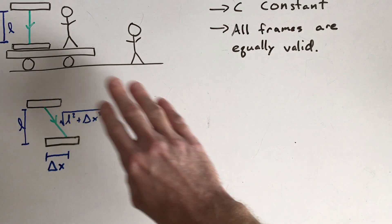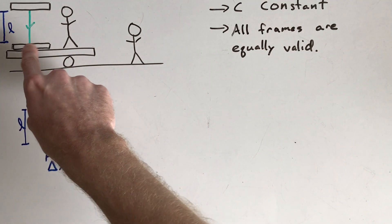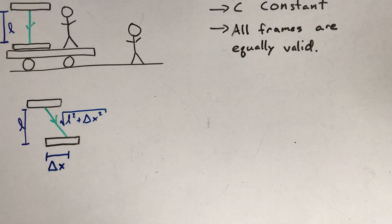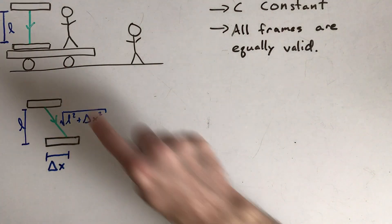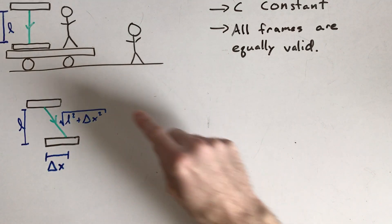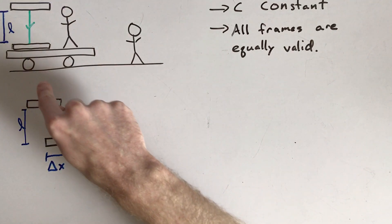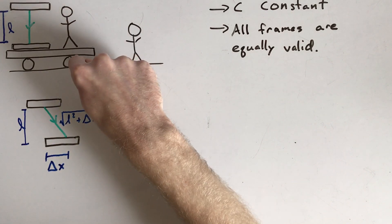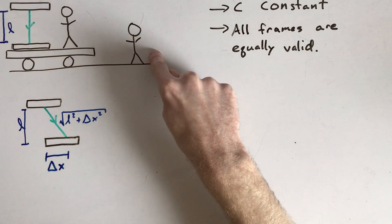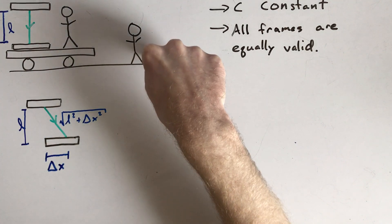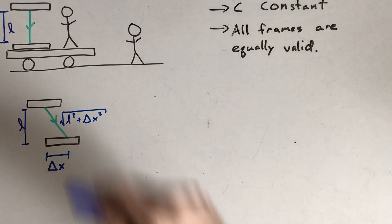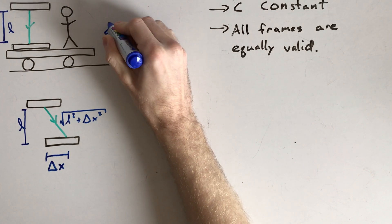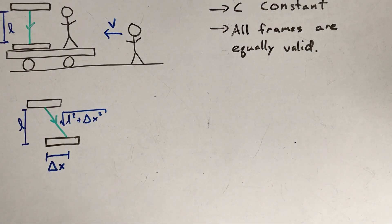Let's consider a light clock — basically two mirrors where a photon, a single particle of light, bounces between them. We place this light clock on a train or car that is moving relative to some other observer. In the train's reference frame, it's the other observer who is moving, so we give that person a speed V to the left.